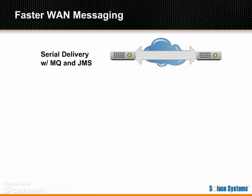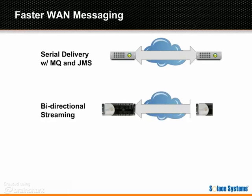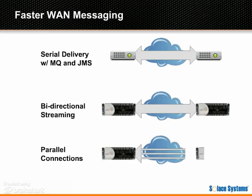Solace uses special TCP semantics to send data over WAN. For example, a sliding TCP window enables the continuous and parallel streaming of messages and acknowledgments, and multiple TCP connections support the simultaneous delivery of many messages.